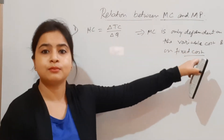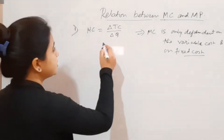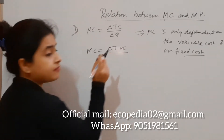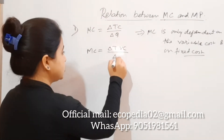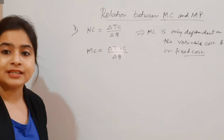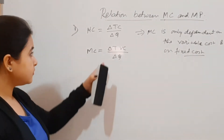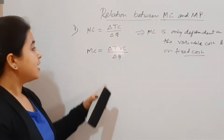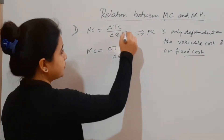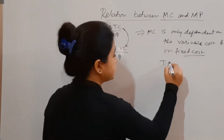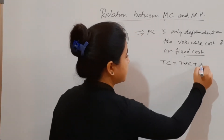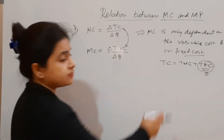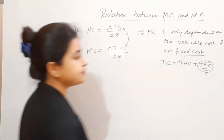Since marginal cost does not depend on fixed cost, we can write: MC = ΔTVC / ΔQ. This follows because total cost equals total variable cost plus total fixed cost, and since MC does not depend on fixed cost, the change in fixed cost is zero — so only TVC matters.